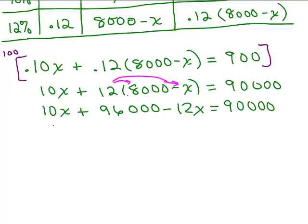All right, so let's combine like terms here. I have negative 2X plus 96,000 equals 90,000.